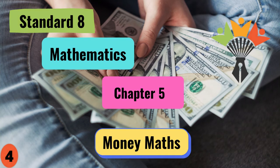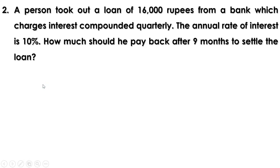Welcome to Maths Companion. In the last video we discussed the section on changing times, and there was a homework problem. Let us do it now. A person took out a loan of 16,000 rupees from a bank which charges interest compounded quarterly. The annual rate of interest is 10%. How much should he pay back after 9 months to settle the loan?